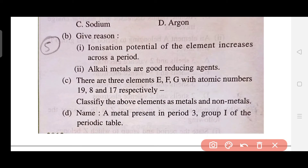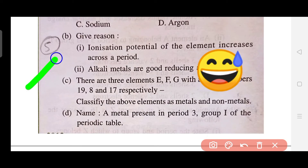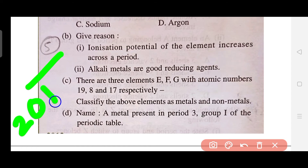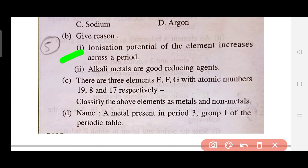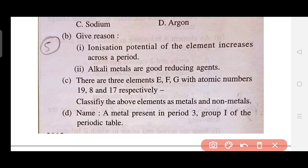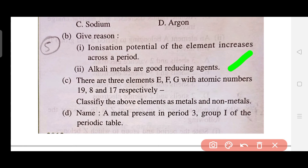For students who are good at giving reasons, the fifth type is for you — it was asked in 2012. In this type, you need to explain why ionization potential increases across a period, or why metallic character increases going down the group. Be very careful about keywords; don't write your own wording but use the precise answer expected. You can also be asked: why are alkali metals good reducing agents?